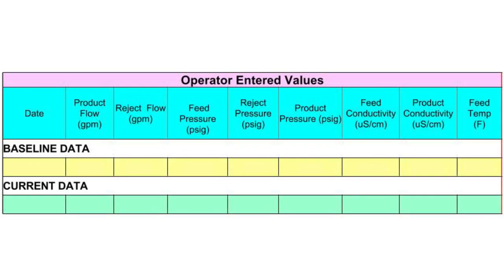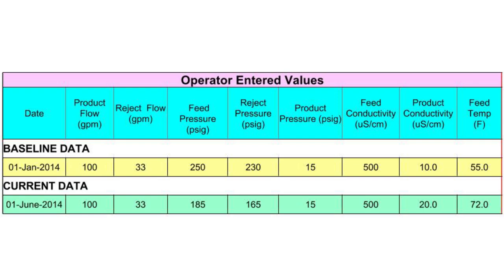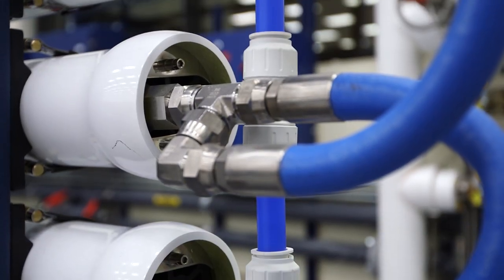Here's a typical normalization spreadsheet. Baseline data should be collected about two days after new RO membranes are installed. Here's an example of data collected January 1st and June 1st. Without taking feed water temperature into account, the lower feed water pressure and higher product conductivity in the June data indicate RO membrane damage. The normalized percent permeate flow, which takes the change in feed water temperature into account, actually shows RO membrane fouling because the normalized percent permeate flow is lower than baseline. We recommend you collect RO data at least once per week and have a service technician from an outside vendor evaluate the data at least quarterly.